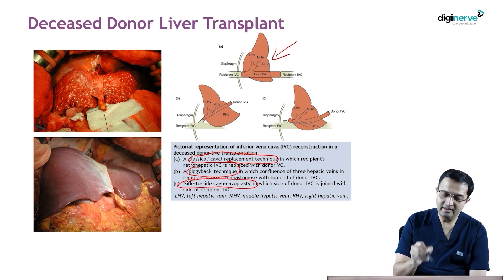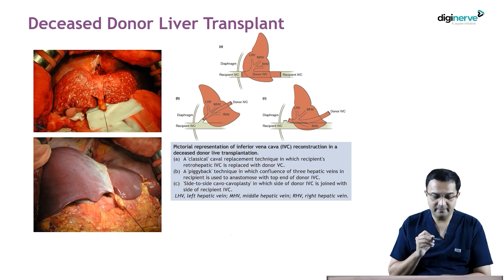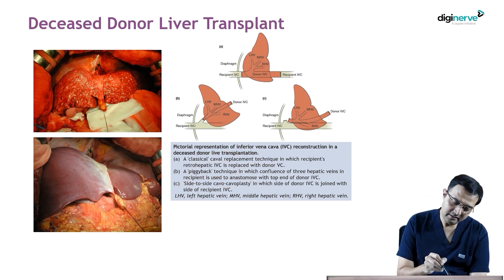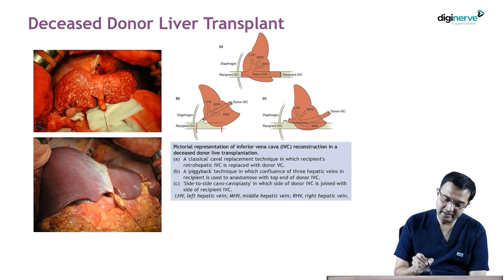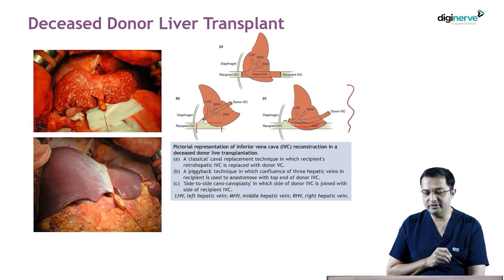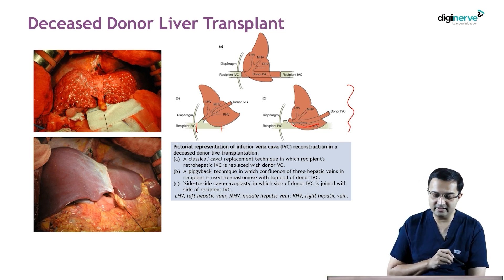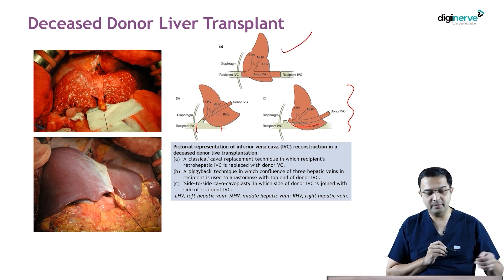In the classical technique you have to clamp both parts of the IVC, which can cause renal injury. With the piggyback technique, you need not clamp the IVC completely, and with side-to-side cavoplasty you can partially clamp the IVC. Therefore, the incidence of renal injury during transplantation is less with these two techniques compared to the classical caval replacement technique.